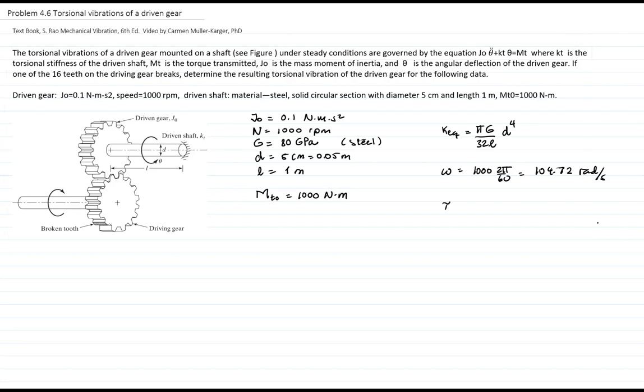The period of oscillation is 2π/omega, which is 2π/(1000 × 2π/60). Therefore, the period is 0.06 seconds.